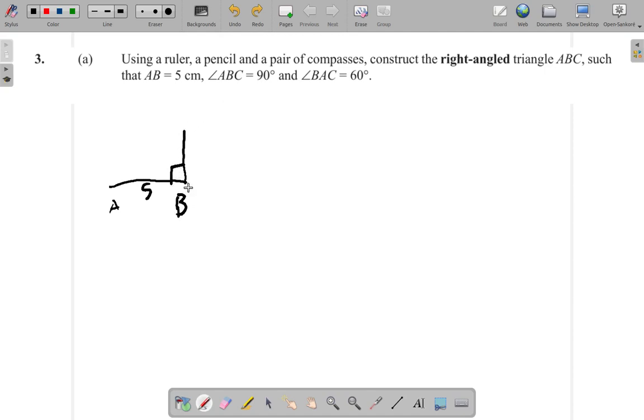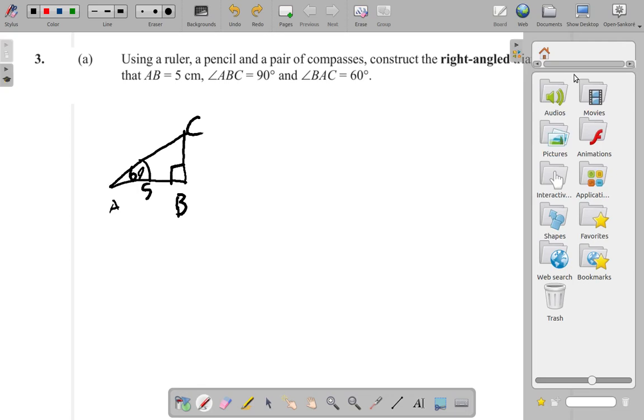And BAC is 60, so the 60 would be here. C would be up here. So that's what it's going to look like. Let's see how we go about doing this.